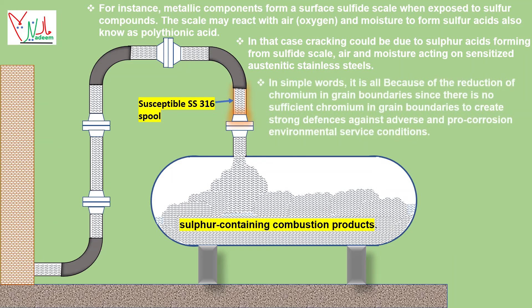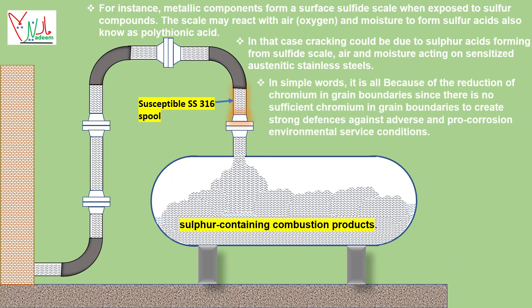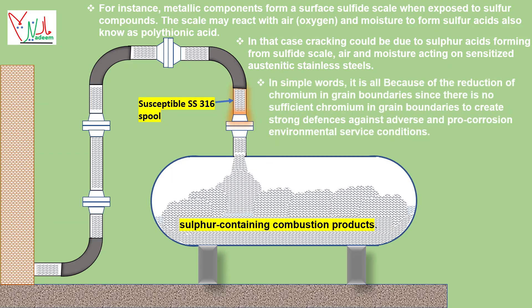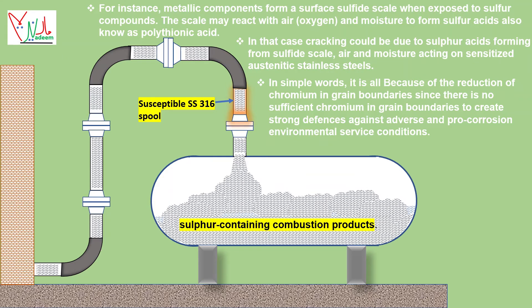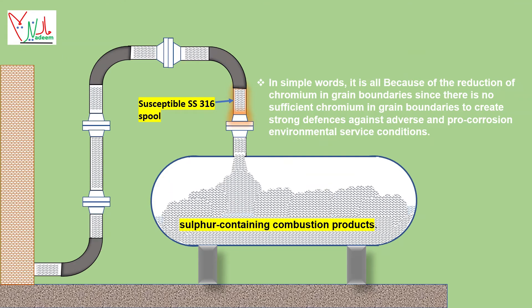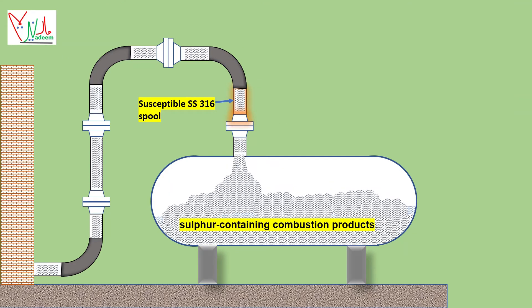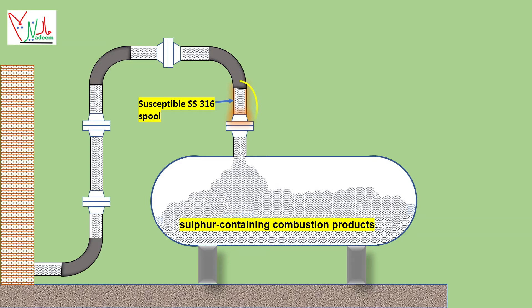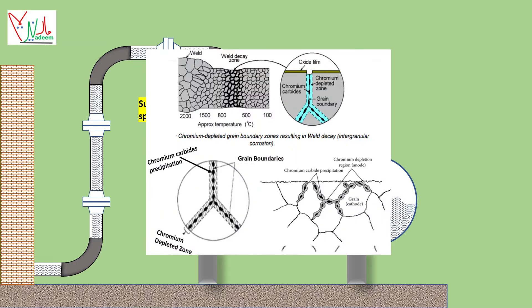In simple words, it is all because of the reduction of chromium at grain boundaries — since there is insufficient chromium at grain boundaries to create strong defenses against adverse, pro-corrosion environmental service conditions.